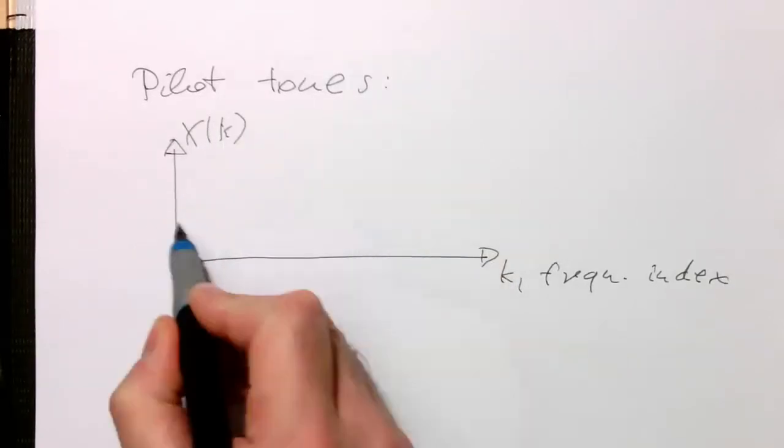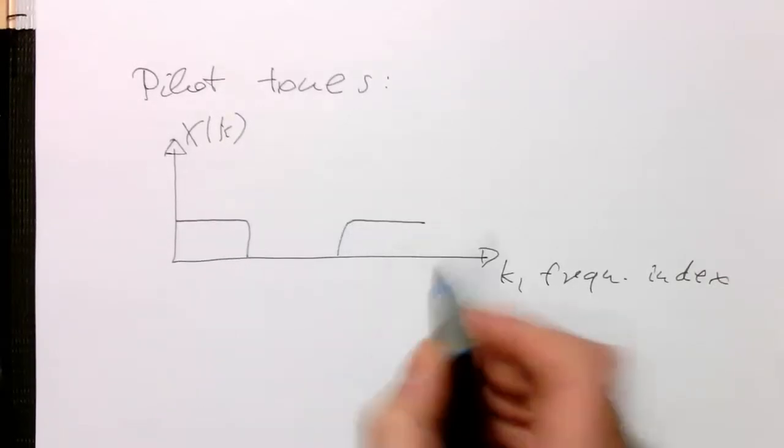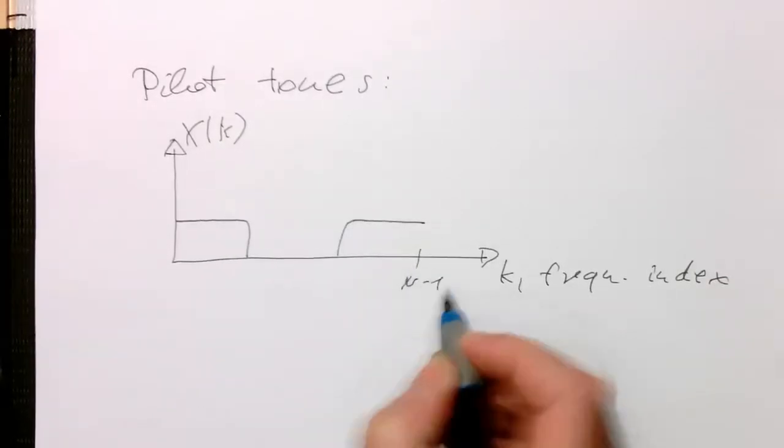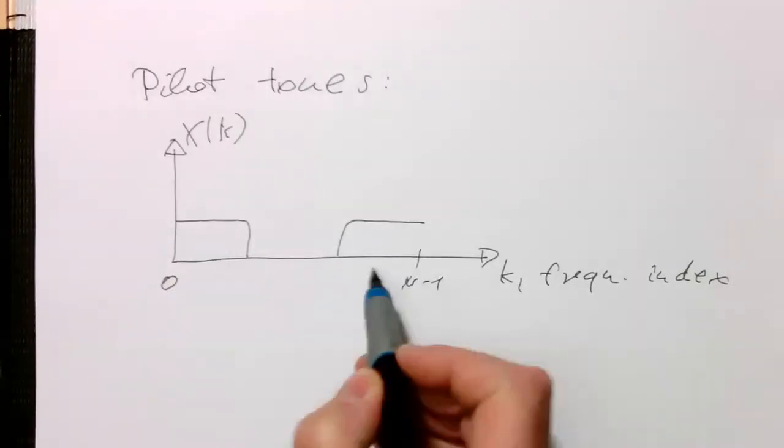So remember our discrete spectrum looks like that, n minus 1 to 0. So these are, that's our symbol in the frequency domain,